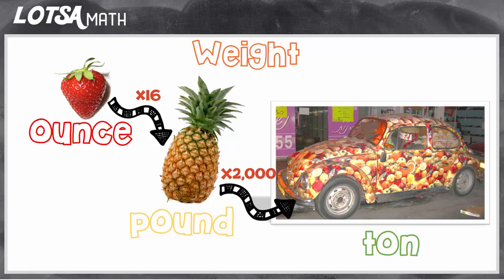So it takes 16 ounces to make a pound, and it takes 2,000 pounds to make a ton.